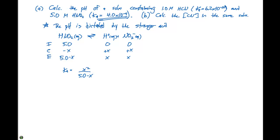Sometimes we can use approximations when Ka values are really small — smaller than 10 to the minus 5 — or when we have a very large concentration of our acid. Here we have 5.0 molar, which allows us to assume x is much, much smaller than 5. With that approximation, we can rewrite the expression as x squared divided by 5.0, set equal to the Ka of 4.0 times 10 to the minus 4, and avoid the quadratic equation entirely.